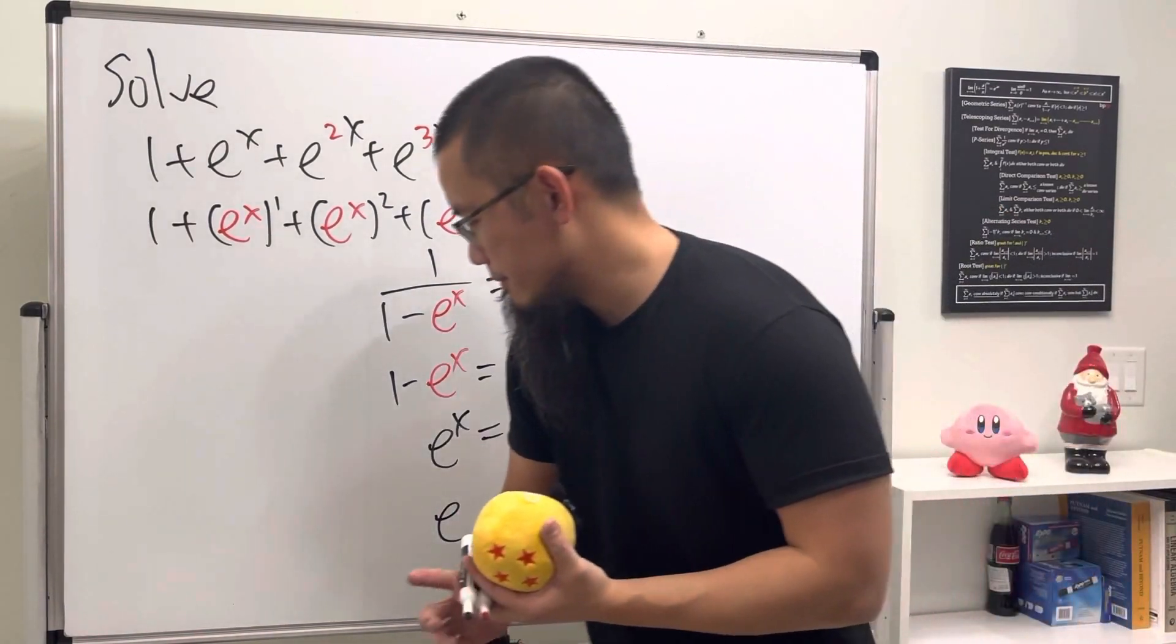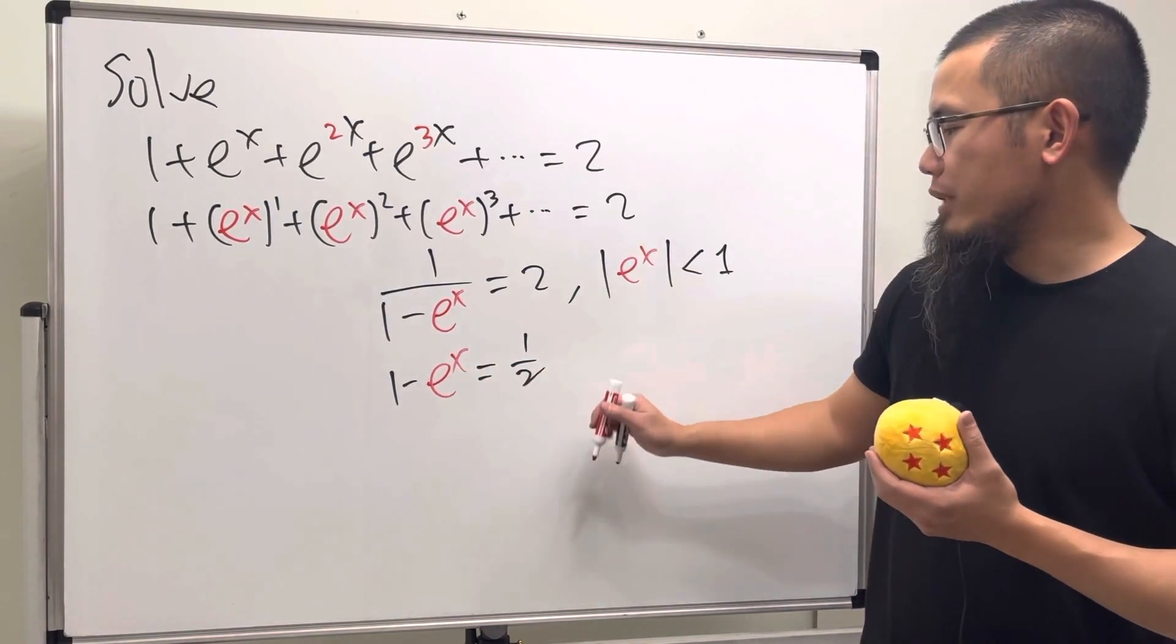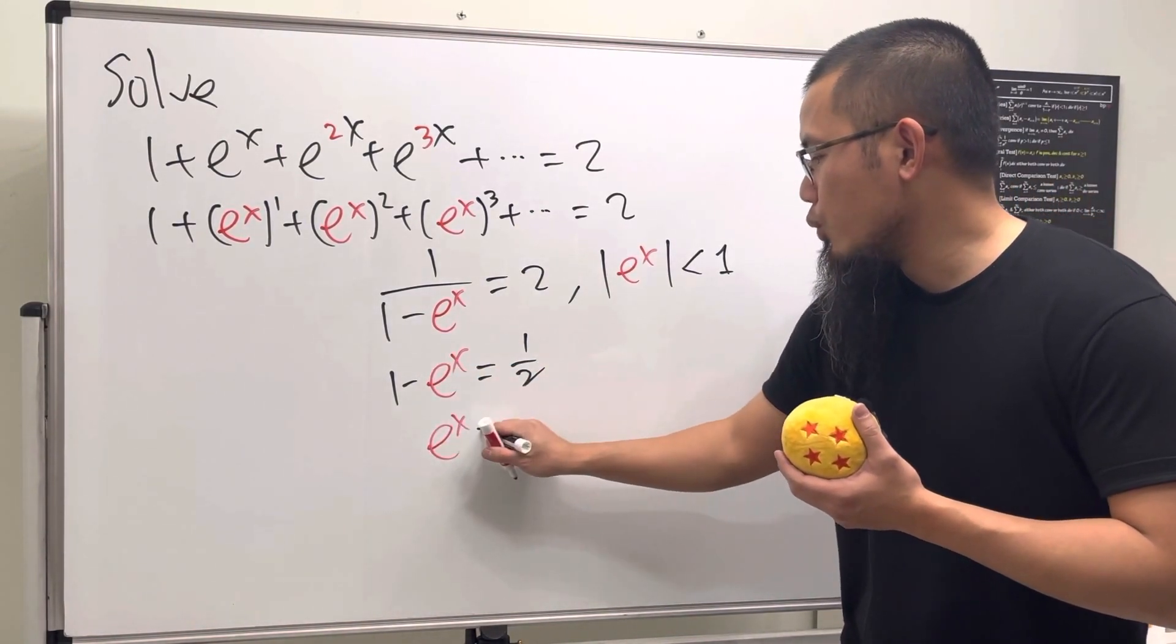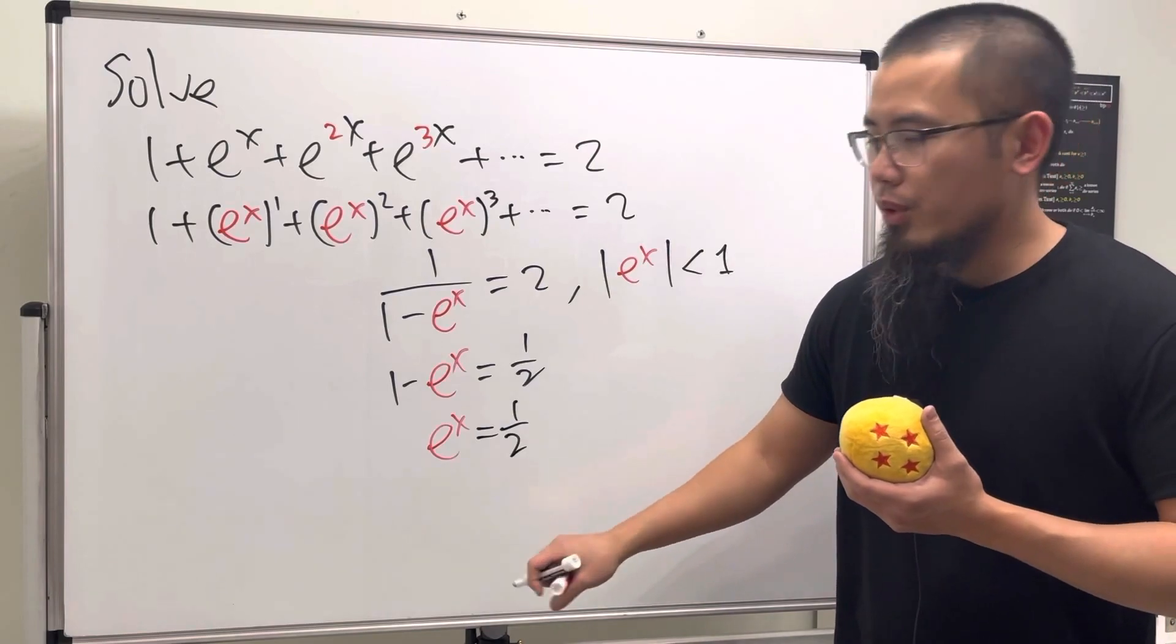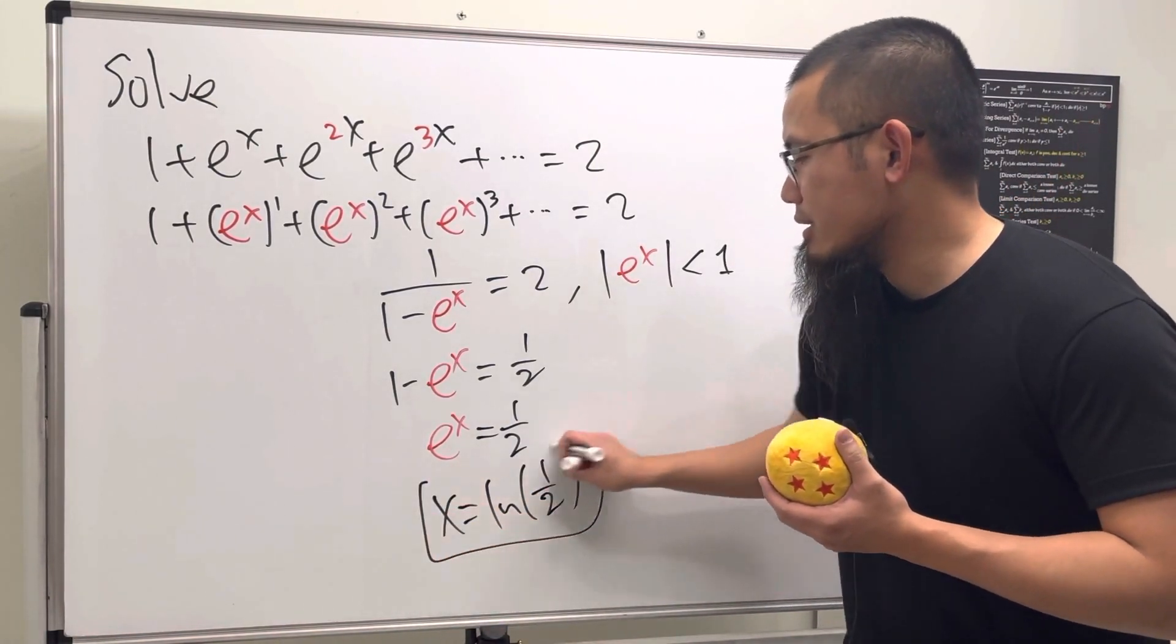So that means e to the x is equal to 1 half. So that means x is equal to ln of 1 half and then we are done.